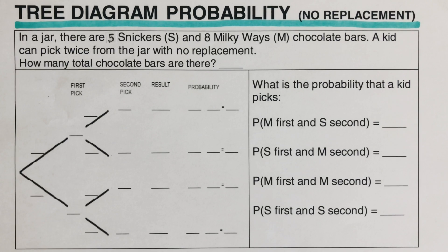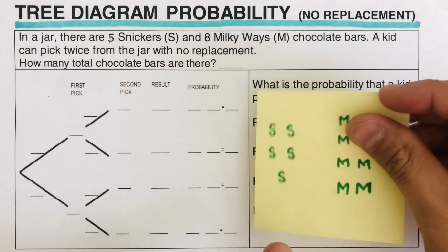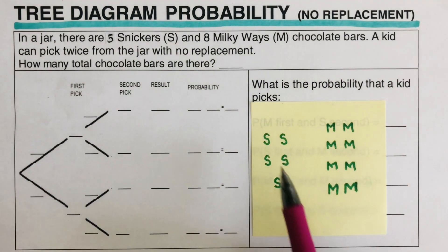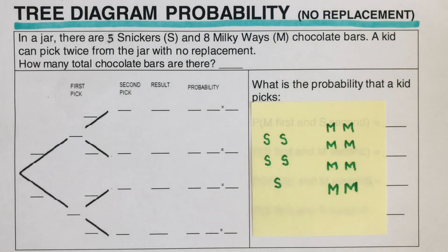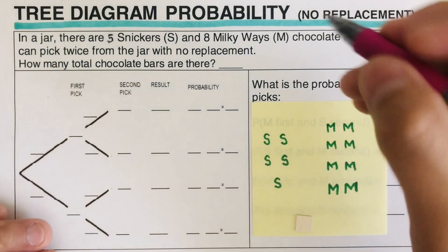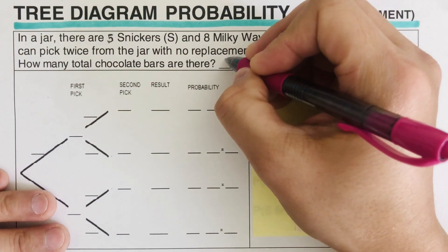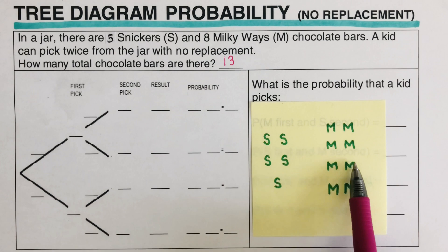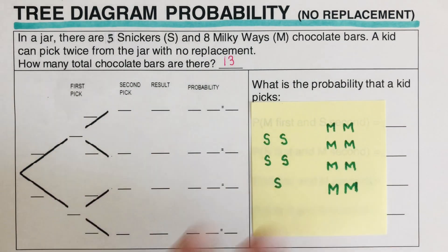A kid can pick twice from the jar with no replacement. I've put this post-it as a jar, and inside there are five Snickers and eight Milky Way bars. If a kid picks a Snickers, it's not going to get replaced — it's gone. So we find the total: eight plus five is thirteen total chocolate bars.